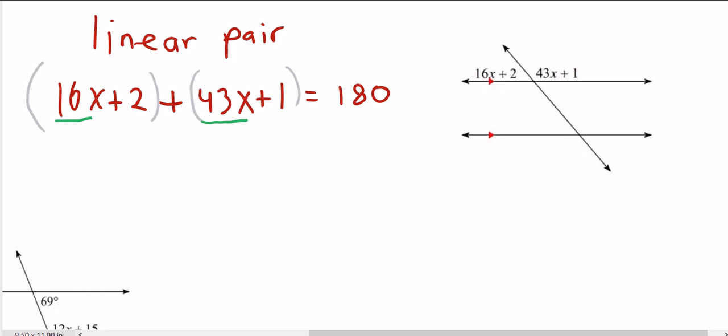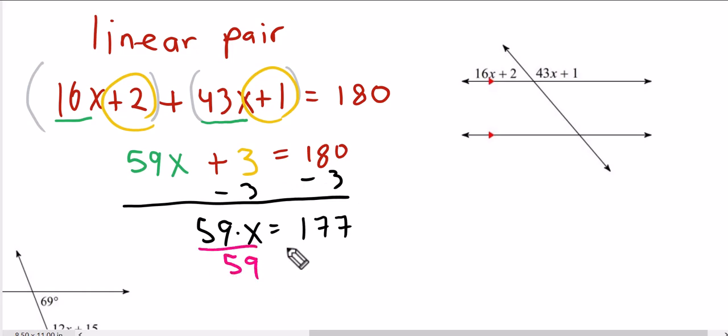We can combine like terms on the same side. We go ahead and subtract this from both sides. Divide both sides by 59. And that is a value that we get for x.